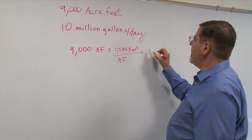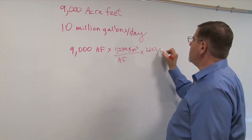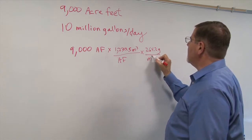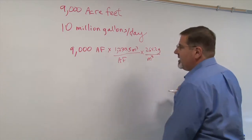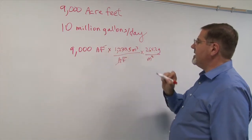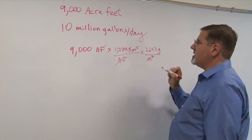And now I'm going to multiply that by 264.2 gallons per cubic meter. And so all we did here is we have converted acre feet to cubic meters, and then we took those cubic meters, canceling, and converted them to gallons.